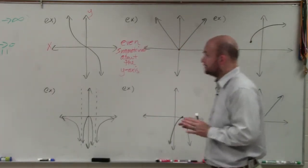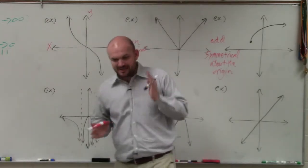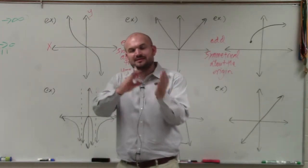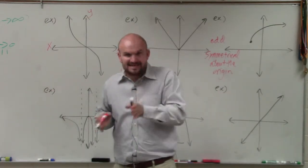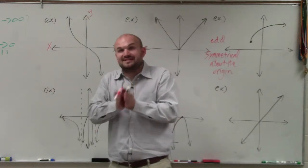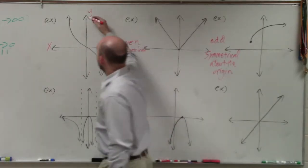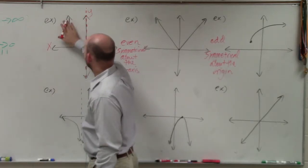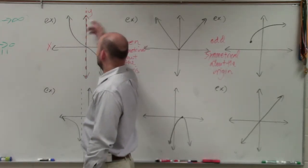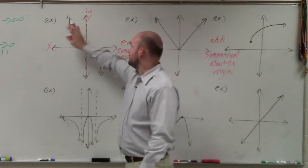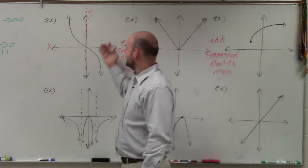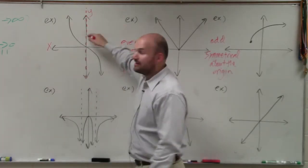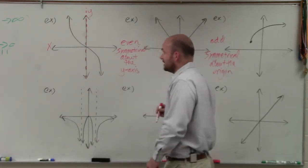Let's take a look at this first example. Remember, a line of symmetry is like a mirror reflection — a dotted line that cuts the graph exactly in half. For the y-axis here, if I take a line and reflect this shape over it, that's not going to produce the same graph. So this graph is not symmetrical about the y-axis.